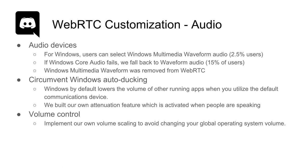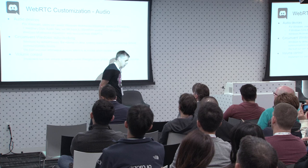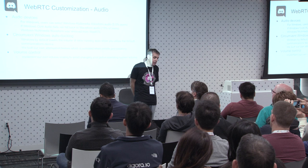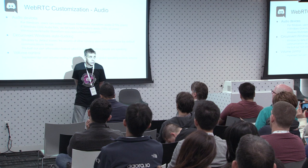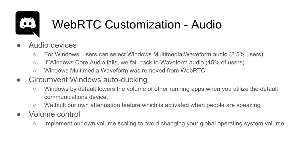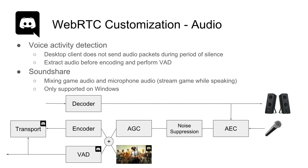The most important customizations were done for audio. In our client you can select legacy audio, which is nothing more than the legacy Windows Multimedia Wave API. About 2.5% of users actually enable this legacy audio device. More interestingly, about 15% of users find that Windows Core Audio fails to initialize — in that case we fall back to Windows legacy audio, which just works. We also want to circumvent the Windows auto-ducking feature, which reduces the volume of other applications when you use the default communication device. Since Discord is not the main application — the game is — we don't want this to happen. We also implemented our own volume control and scale the audio samples ourselves instead of relying on the OS volume control.